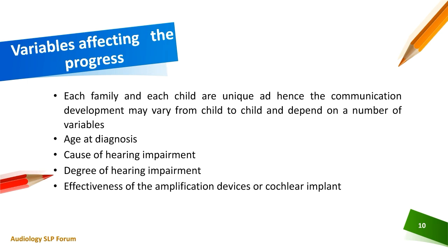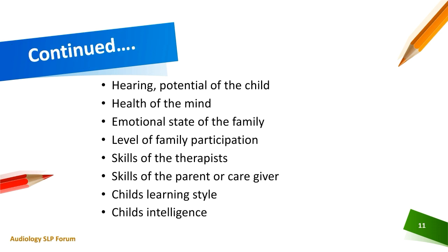Next is variables affecting the progress. Each family and each child are unique, and hence communication development may vary from child to child depending on a number of variables: age of diagnosis, cause of hearing impairment, degree of hearing impairment, effectiveness of the amplification devices or cochlear implant, hearing potential of the child, health of the child, emotional state of the family, level of family participation, skills of the therapist, skills of the parents or caregiver, child's learning style, and child's intelligence.